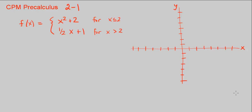This is CPM Pre-Calculus Chapter 2, Number 1. We're going to let f of x be x squared plus 2 for x is less than or equal to 2, and 1 half x plus 1 for x is greater than 2.